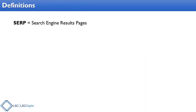Definitions. First, what is a SERP? A SERP is a search engine results page. So that's what shows up when you go to Google and you type in 'blue widget' and all those search results show up. That is a SERP — search engine results page.